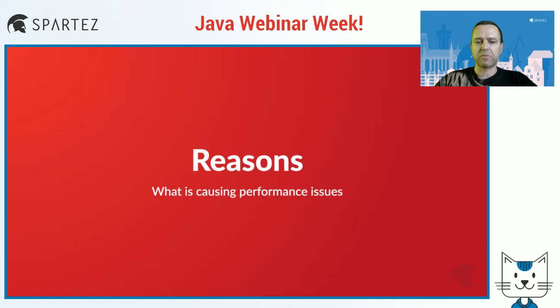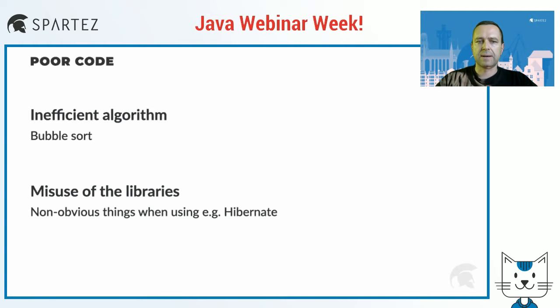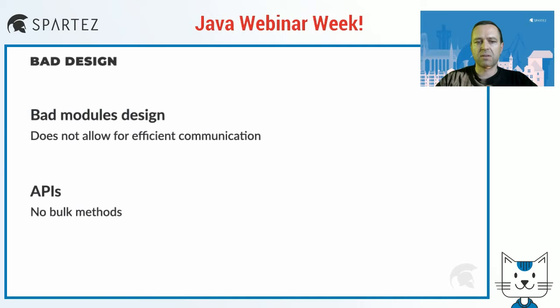Let's first talk about the reasons of performance issues. I'm not going to talk about all possible reasons, just some of them — the ones that I've seen most often in my experience. The first obvious thing is poor code. For example, using bubble sort instead of a more performant algorithm might be fine for a small set of data, but will become problematic for larger data sets. Using some libraries and tools might be quite tricky — if you don't get things right, it may lead to severe performance issues.